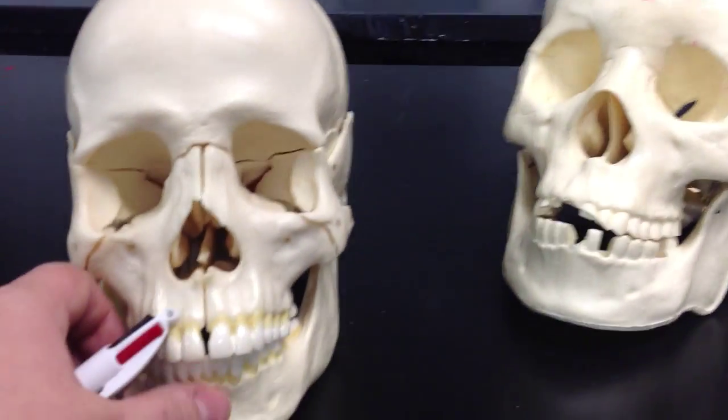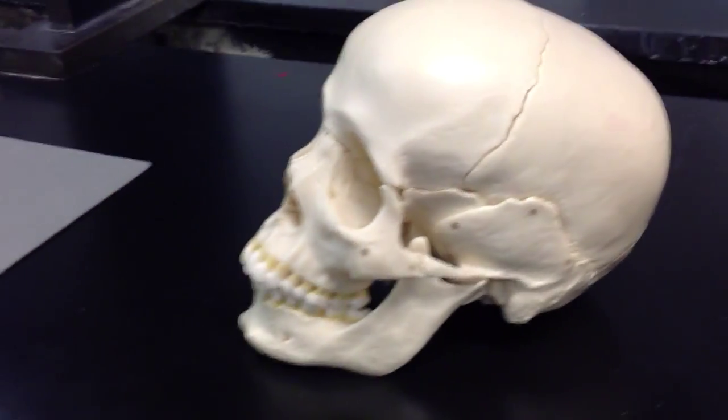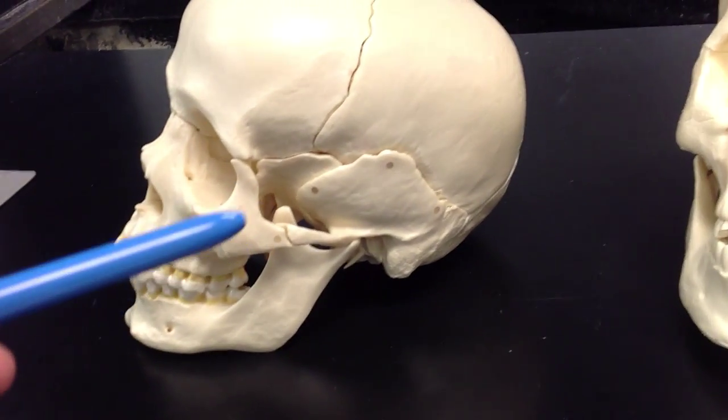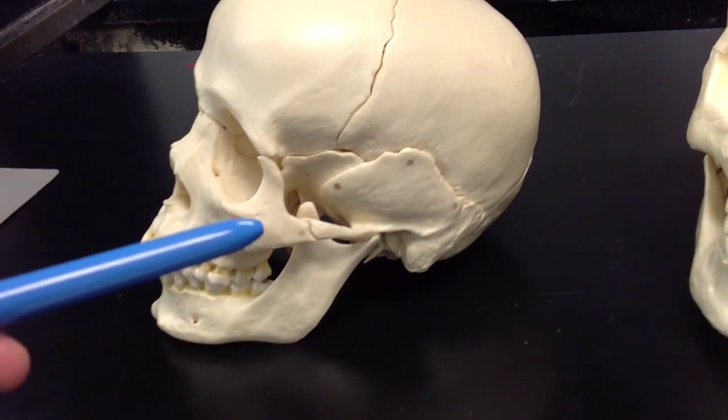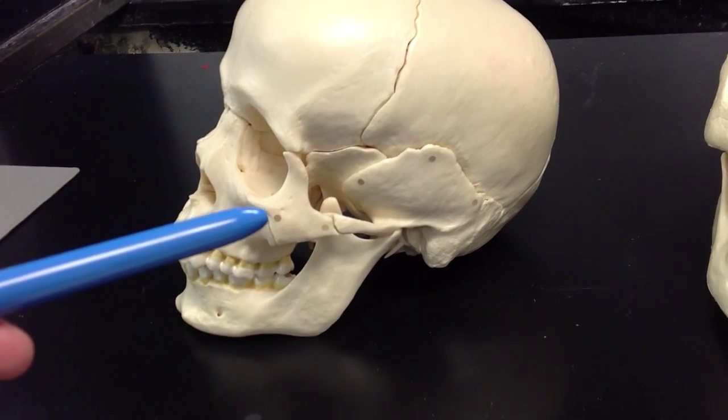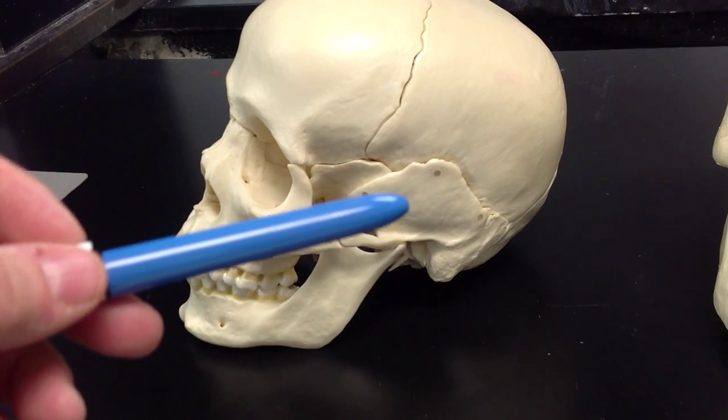We will turn our skeleton to the side. When we move it to the side, what we'll now notice is we have right here the cheekbone called the zygomatic bone. Right here, we have the temporal bone.